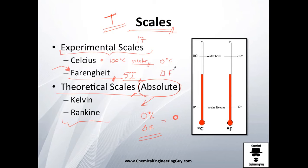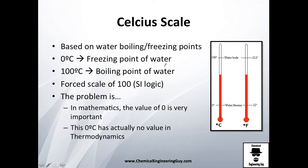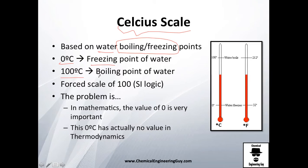Zero Fahrenheit and zero Celsius don't carry deep thermodynamic meaning. On the Celsius scale, it's based on water: zero Celsius is the freezing point and 100 Celsius is the boiling point. The inventor, Celsius, chose a 100-degree range — he could have used 10 or 1000 — but 100 is logical for the international system.